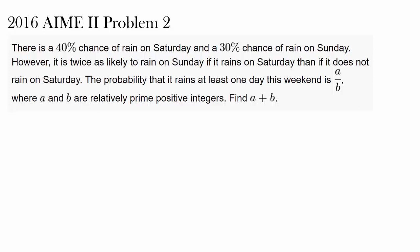This is a pretty tricky probability question, so let's read it carefully. There is a 40% chance of rain on Saturday and 30% chance of rain on Sunday. However, it is twice as likely to rain on Sunday if it rains on Saturday than if it does not rain on Saturday. The probability that it's going to rain at least one day this weekend is A over B, where A and B are relatively prime integers, and we wish to find A plus B.